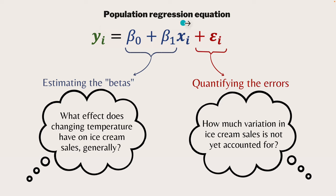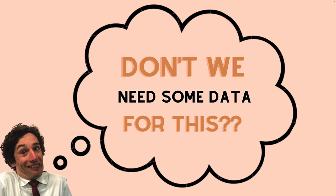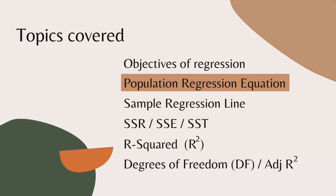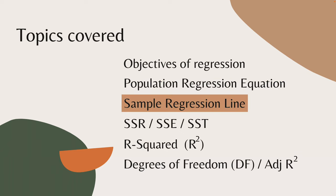The important thing to understand about the population regression equation is that beta 0 and beta 1 are parameters that we can never ever know for sure - we're only estimating them. Beta 1 represents the slope of the relationship between y and x - it's the gradient. Beta 0 represents the y-intercept, where x equals 0, y is going to equal beta 0. So we're going to estimate these two parameters, but we can never know what they are for sure. To actually create estimates of beta 0 and beta 1, we're going to need some data. We need to move on to the sample regression line.